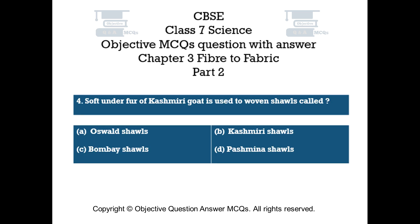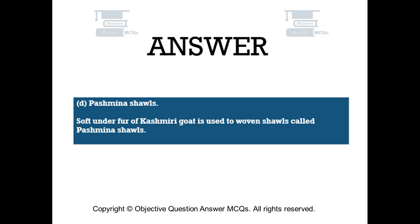Question number 4. Soft under fur of Kashmiri goat is used to weave shawls called. Option A: Oswald shawls. Option B: Kashmiri shawls. Option C: Bombay shawls. Option D: The right answer is Option D — Pashmiri shawls. Soft under fur of Kashmiri goat is used to weave shawls called Pashmiri shawls.